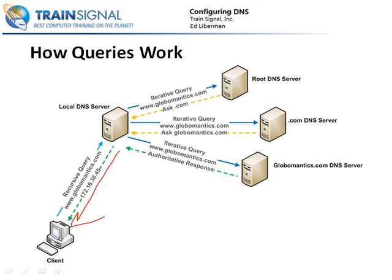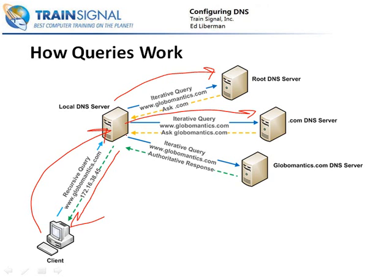So that's the entire process. Just to review: the client says, hey local DNS server, do you know who this is? Local DNS server thinks, no, but it's a recursive query so I'm going to go out and find the answer. It says, root, do you know? Root says, nope, but you can ask .com. .com, do you know? Nope, but you can ask globalmantics.com. Globalmantics.com, do you know? Yes, I do. And then the answer is given to the local DNS server, who passes that answer back down to the client. And that's how queries work.